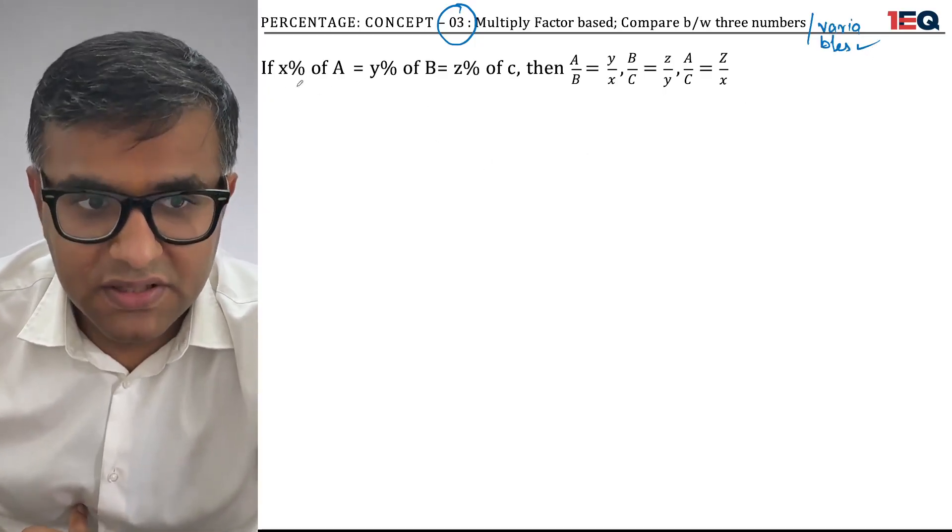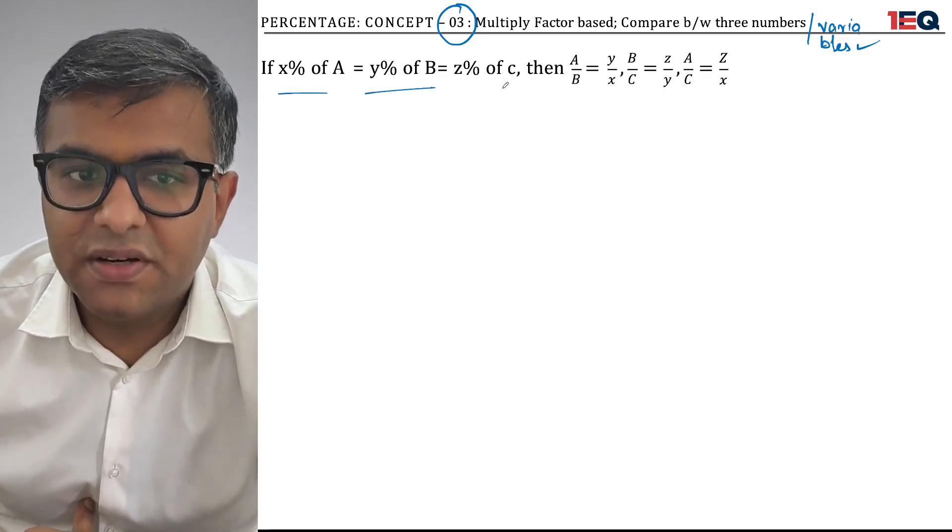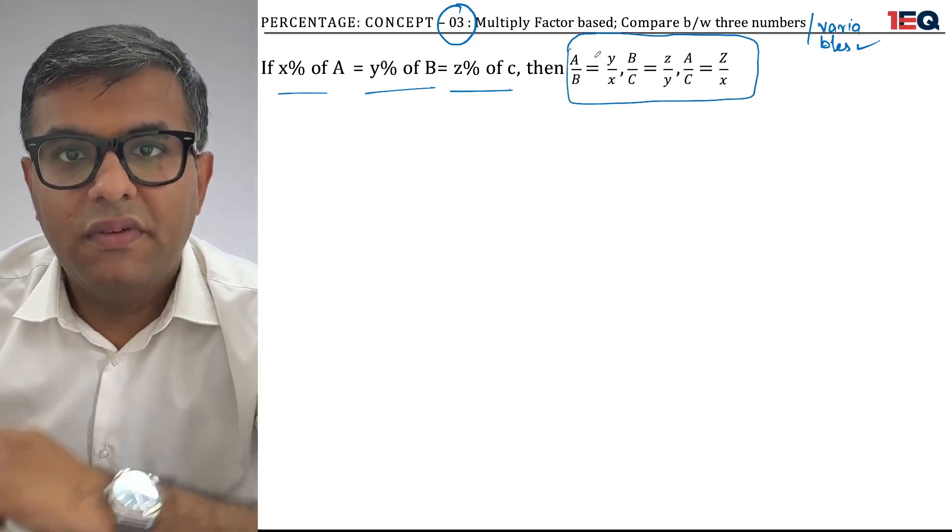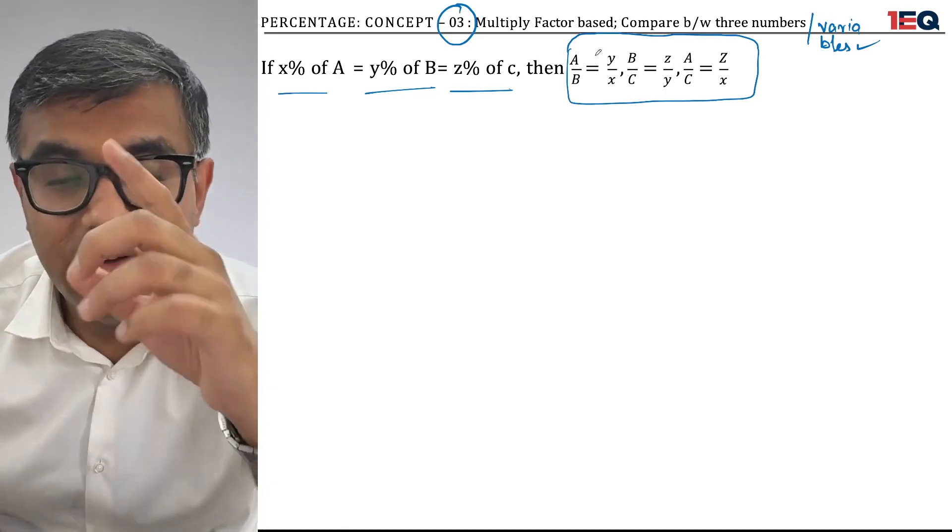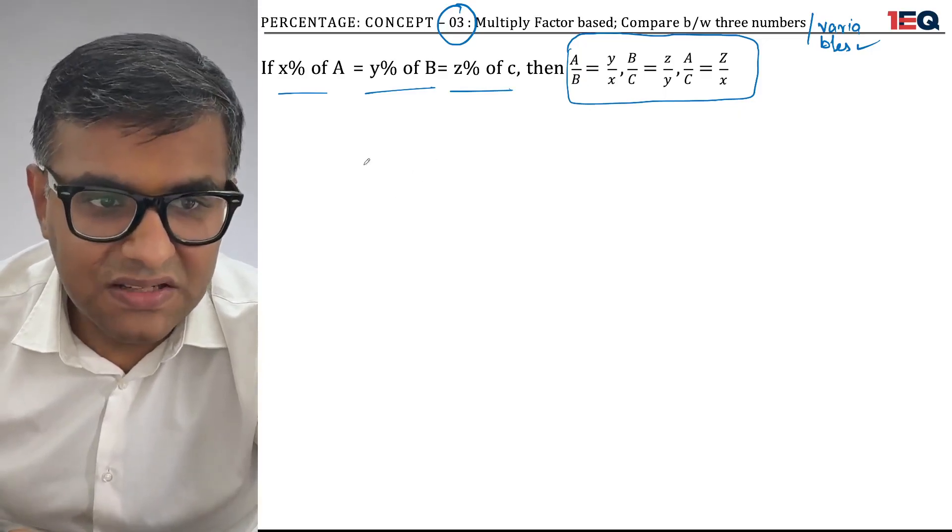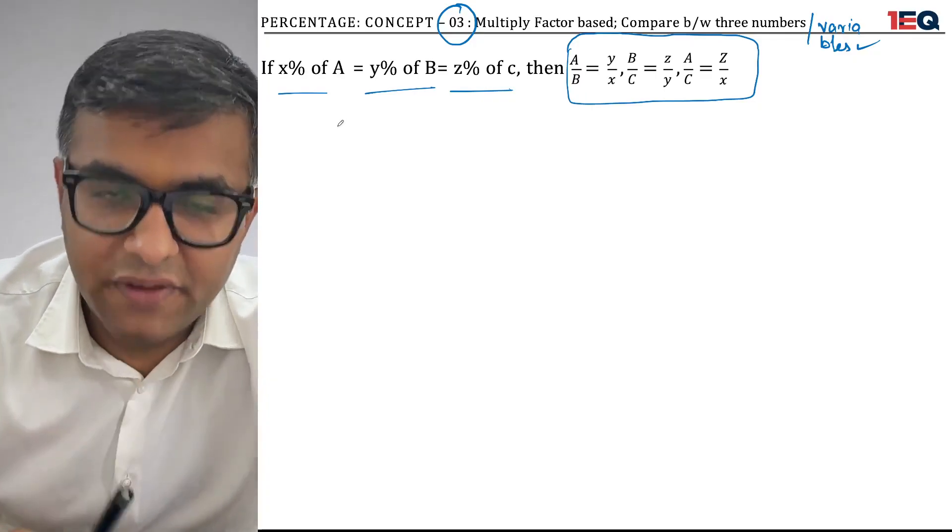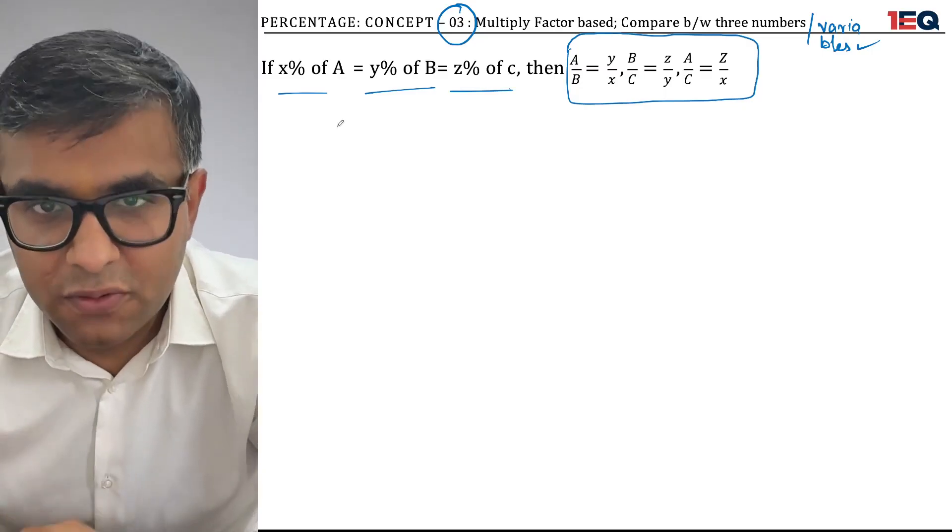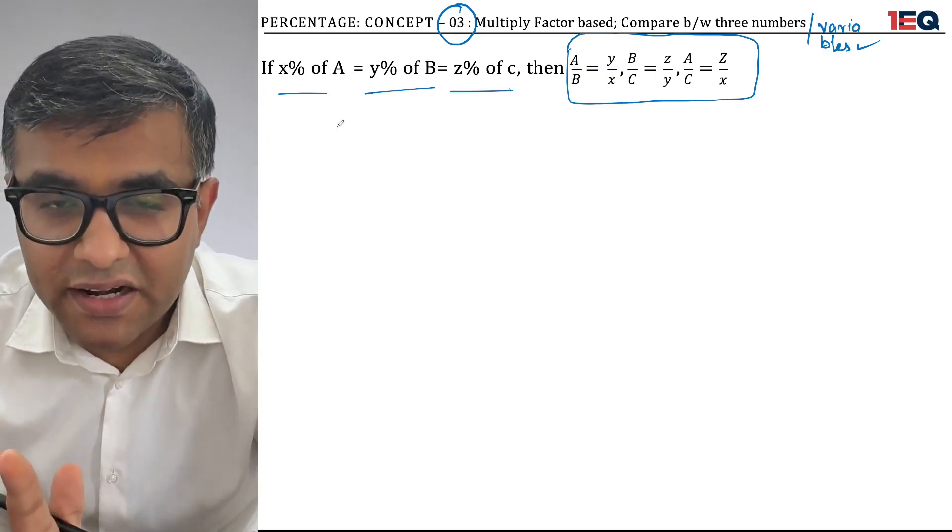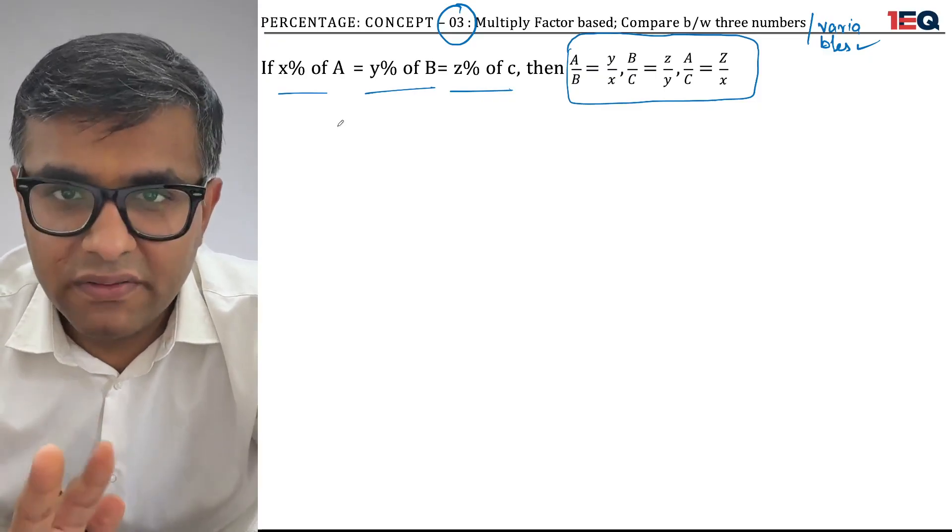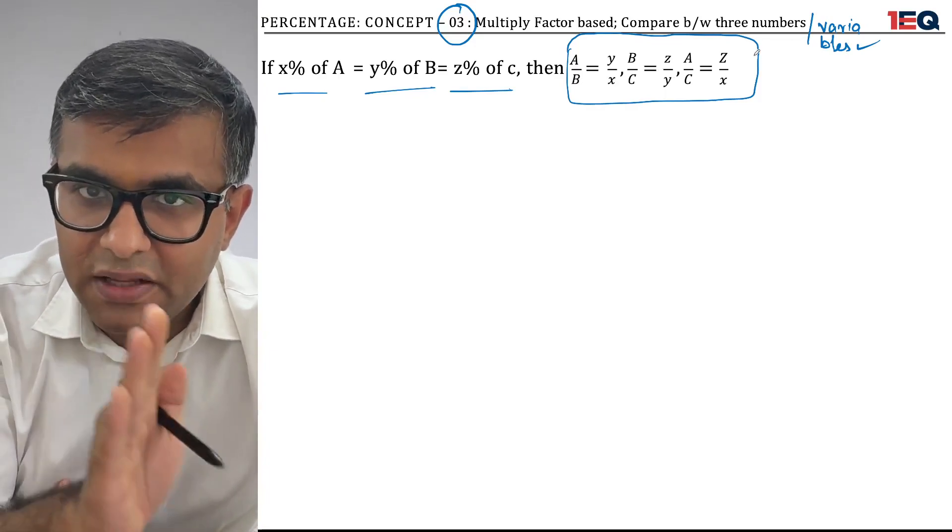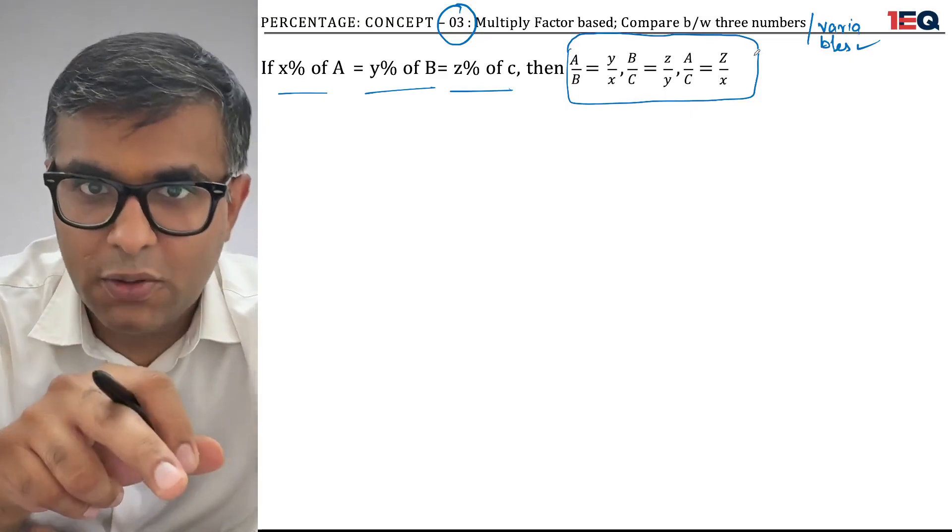So let me come down to this equation. It says if x% of A equals y% of B equals z% of C, then what is the relationship between A, B and C? We have 1 equation and 3 variables. The number of equations and variables need to be equal to find absolute values. Right now, we can only find relative values between 2 or 3 variables.